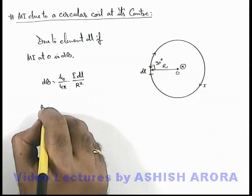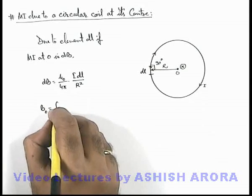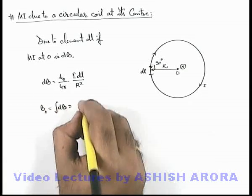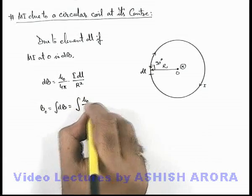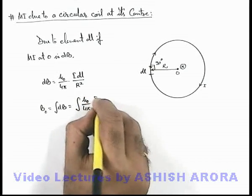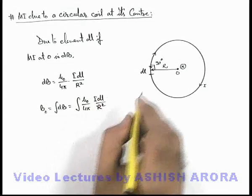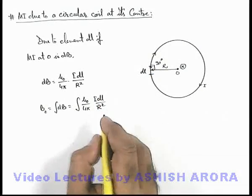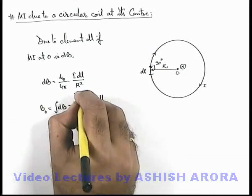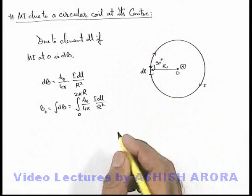So net magnetic induction at point O we can write as integration of dB. It is integration of μ₀/4π times i dl by r². And limits for dl along the length of this coil we write as zero to 2πr for one turn of the coil.